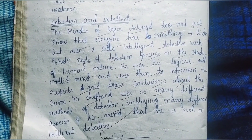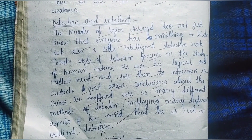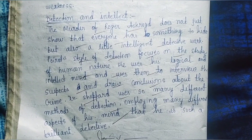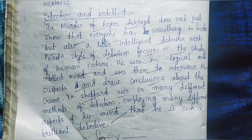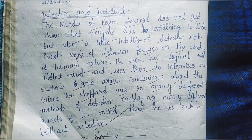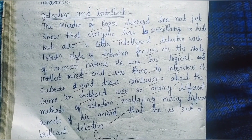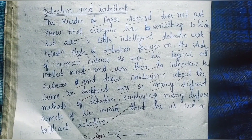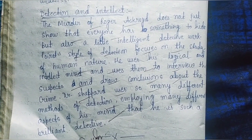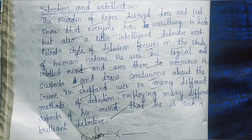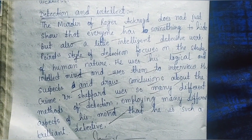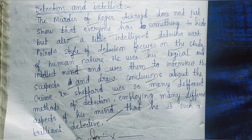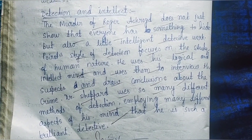Another theme of this novel is detection and intellect. The Murder of Roger Ackroyd does not just show that everyone has something to hide, but also a little intellect detective work. Poirot's style of detection focuses on the study of human nature. He uses his logical and intellectual mind to interview suspects and draw conclusions about the crime. Dr. Sheppard uses so many different methods of detection, employing many different aspects of his mind, making him such a brilliant detective.